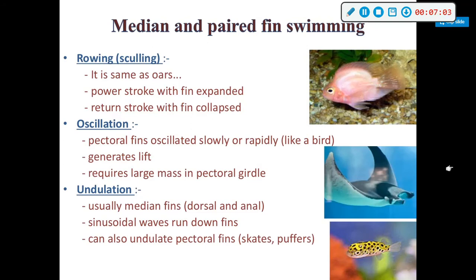What I want you to know is the movements themselves: oscillation is this type of movement, rowing is this type of movement, and undulation is this type of movement — that's the key takeaway.